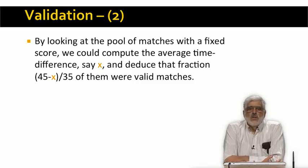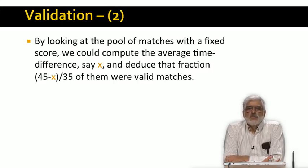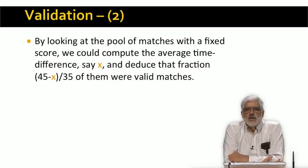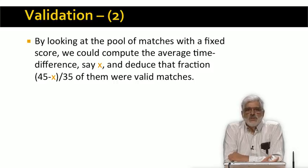Suppose that within this pool the average difference is x. A little math tells you that the fraction of matches that are valid is (45 minus x) divided by 35. So for example, if x equals 10, then this fraction is 1, which makes sense since 10 is the difference that the gold standard provides. If x equals 20, then we would expect that 5/7ths of the matches are valid. That makes sense: 5/7ths of the matches will have an average difference of 10 and 2/7ths of them will have an average difference of 45, so the weighted average of the averages is 20.